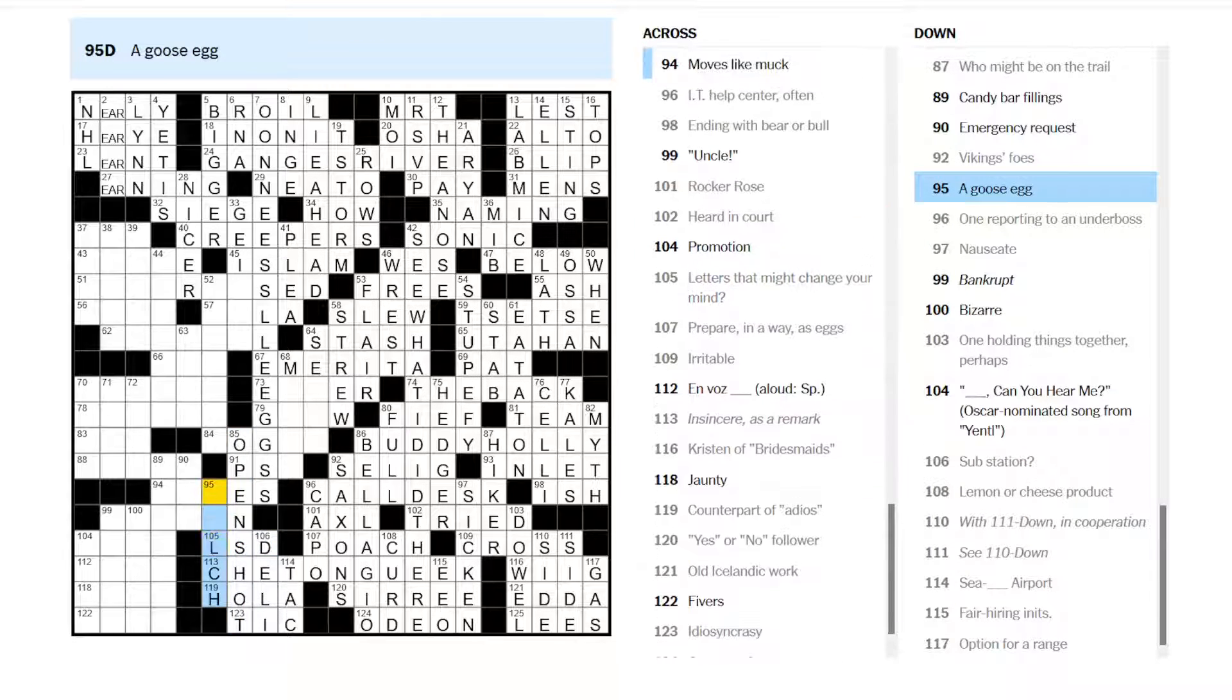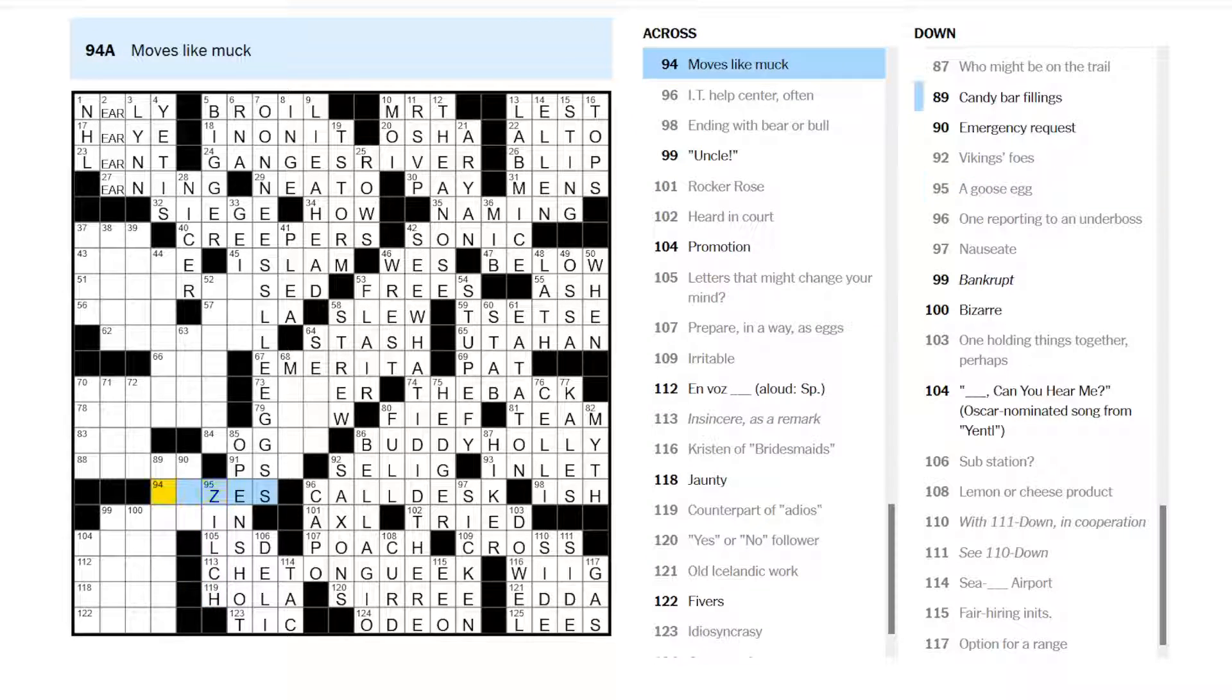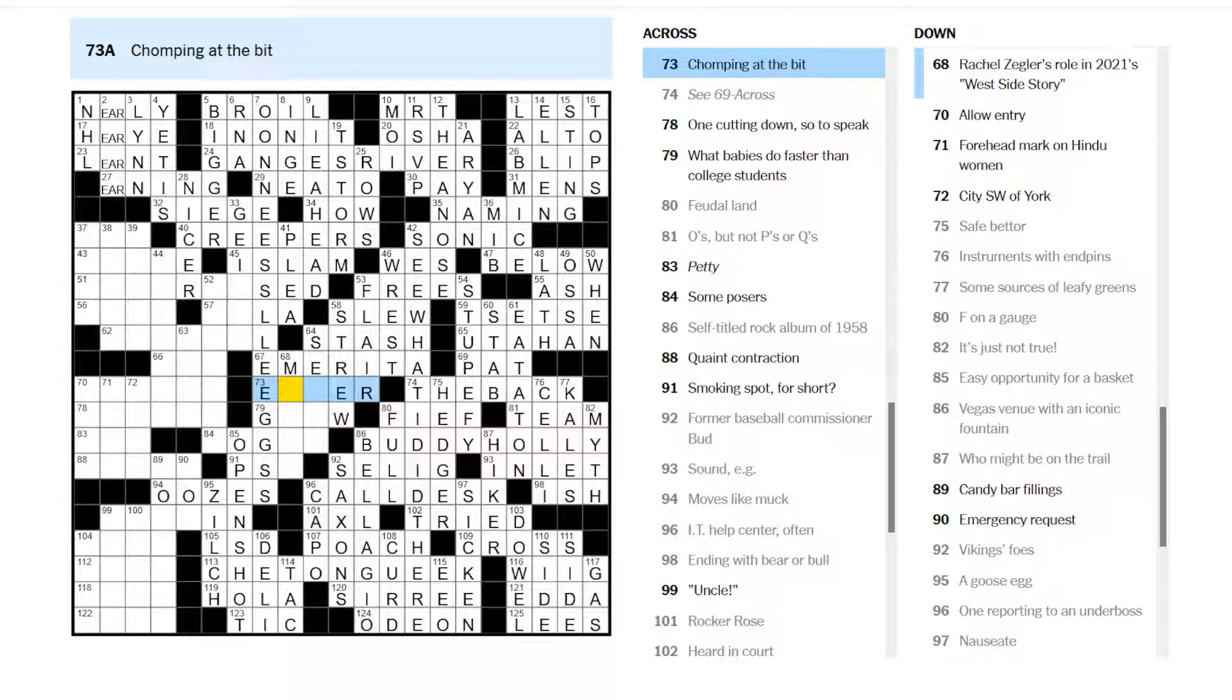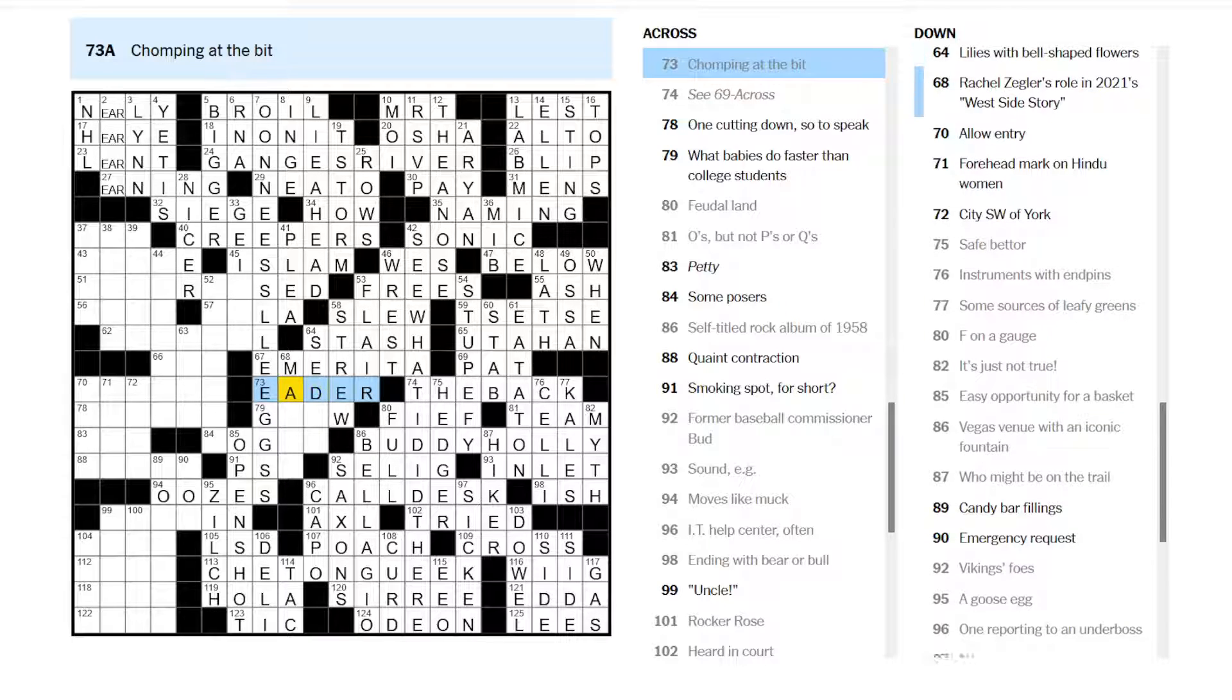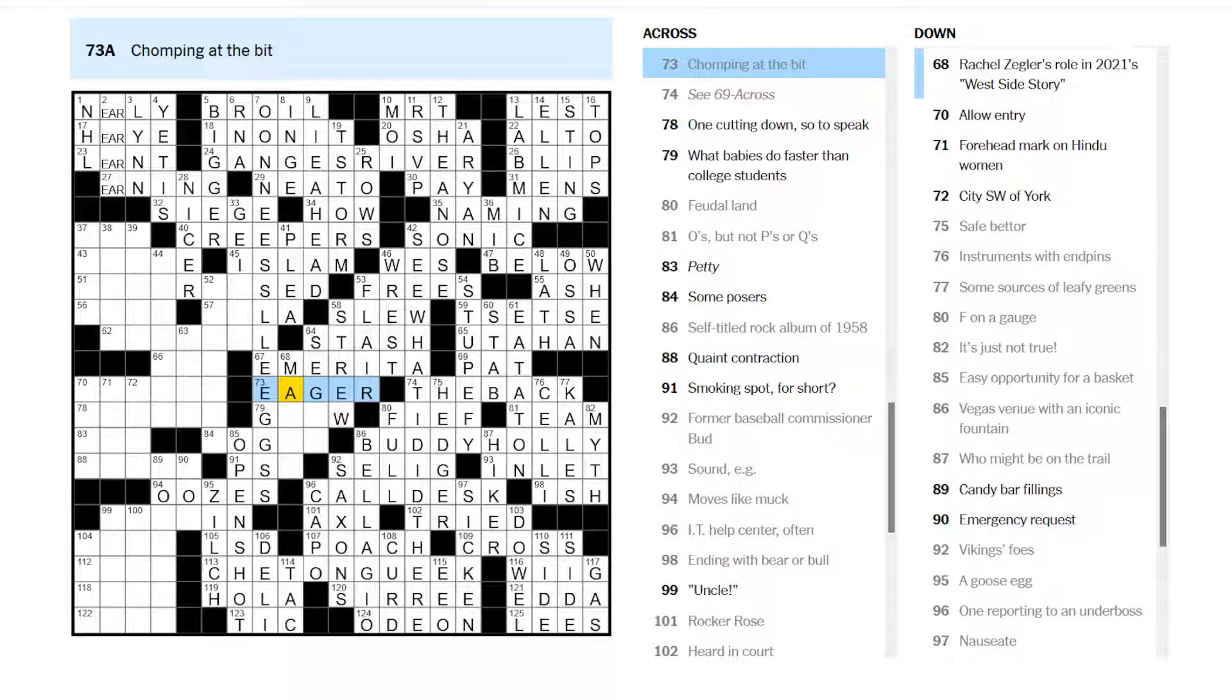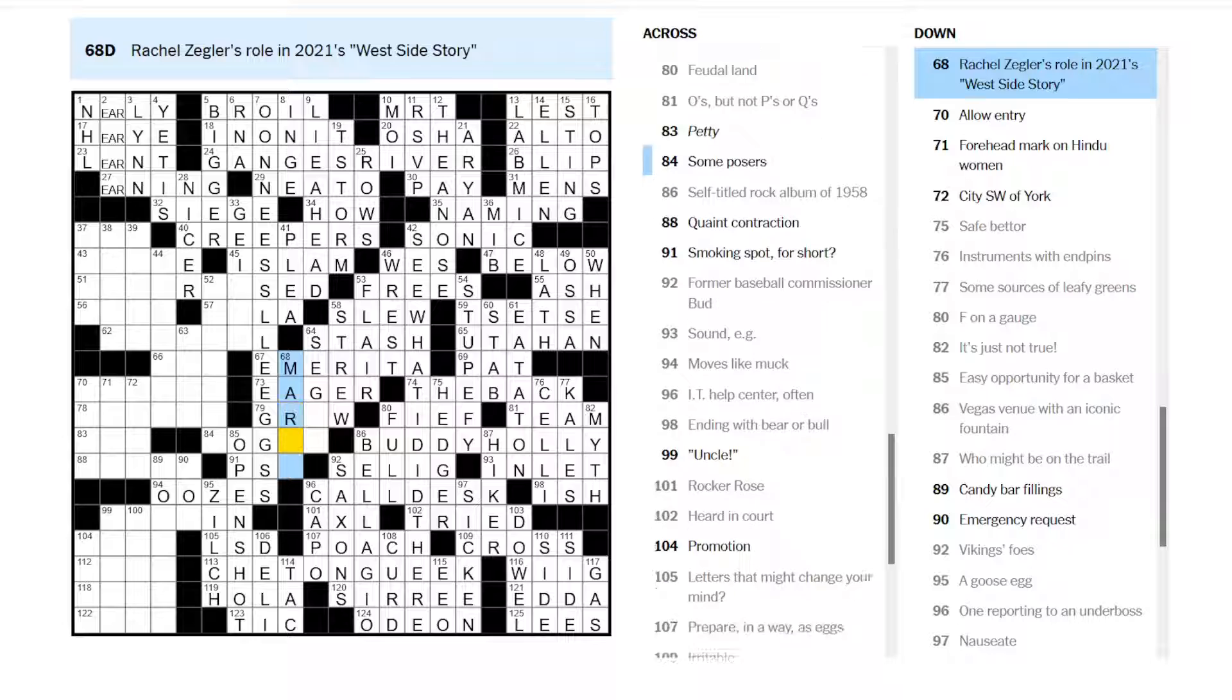Easy Opportunity for a Basket is an Open Shot. Letters that might change your mind is LSD. A Goose Egg is Zilch. Goose Egg is Slang for Zero. Moves like Muck. Maybe oozes. Let's see if we can get this filler here. Chomping at the bit. You are eager. Should be champing at the bit, by the way. Champing at the bit. Yeah. That's the phrase.